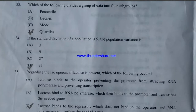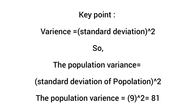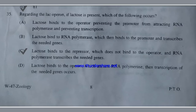If the standard deviation of a population is 9, the population variance is 3, 9, 27, or 81? The key point is that variance equals standard deviation squared. So population variance = 9² = 81. That's why the population variance is 81.